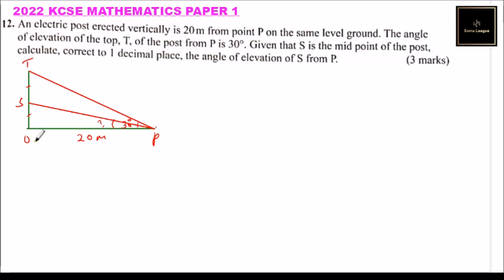So we can be able to get the angle. First of all, since we have been given the angle 30, angle of elevation of T from P,